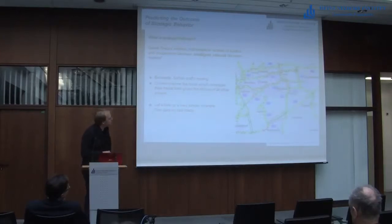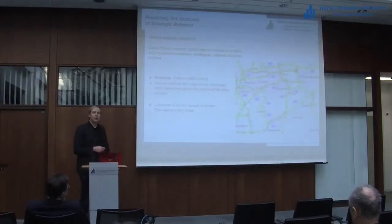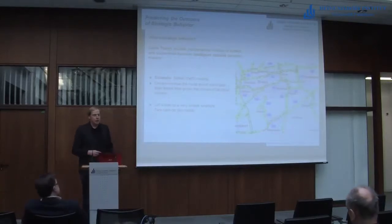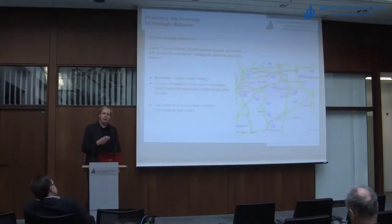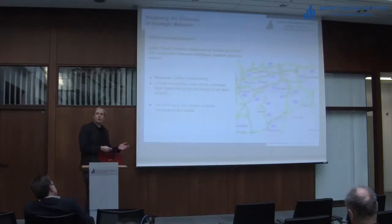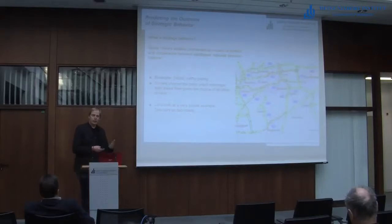An example that illustrates this is selfish traffic routing, something you probably know from everyday life. On the right-hand side is a picture of the traffic in the Ruhr area from yesterday afternoon — before the commuter traffic, so it's basically not too congested. But as you can see, there are situations we face every day where the outcome of our decision depends on what we decided, but also on what others decided.